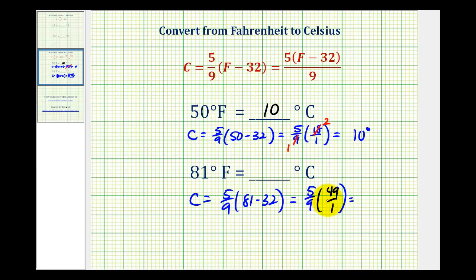Five times 49 would be 245 divided by nine. So now we'll divide 245 by nine. There are two ninths in 24, would be six, and there are seven ninths in 65.